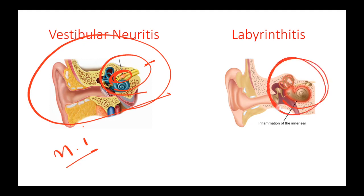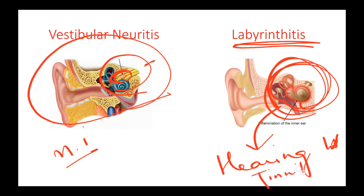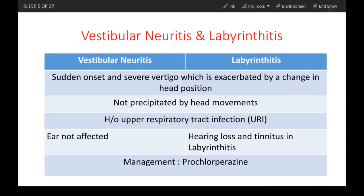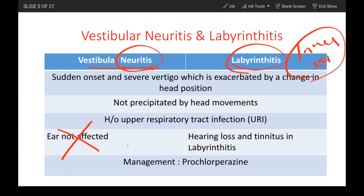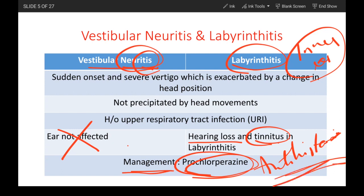In labyrinthitis, there is inflammation of the inner ear. This inflammation will eventually cause hearing loss because the inner ear is being affected. Along with hearing loss the patient might have tinnitus, because the auditory signals are not passing properly due to the inflammation in the inner ear. In vestibular neuritis it is just nerve inflammation so the ear is not affected, whereas labyrinthitis involves inner ear inflammation causing hearing loss and tinnitus. Management for both conditions is an oral antihistamine — symptomatic management because the inflammation will get better with time.